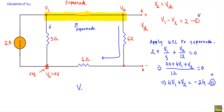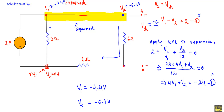Solving equations one and two, I get v1 = −4.4 volt and v2 = −6.4 volt. Now Vth is the voltage across the 6 ohm resistor, which is half of v2: Vth = −6.4 / 2 = −3.2 volt. This is what we calculate using the super node method, and the two results are the same. That's it, thank you.